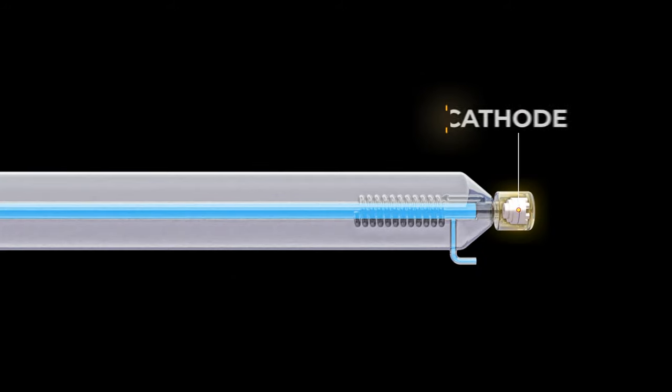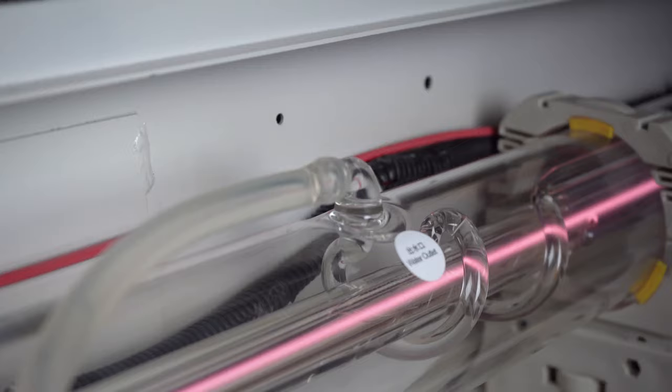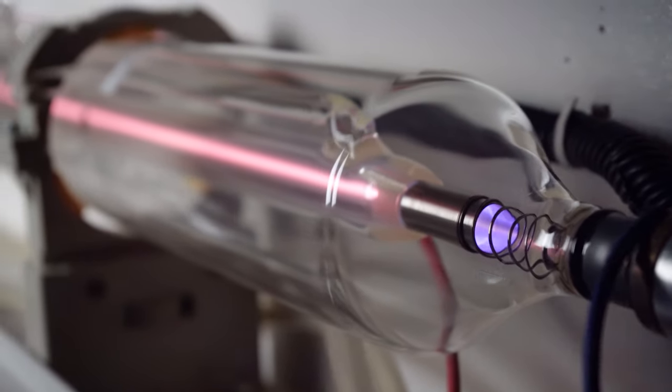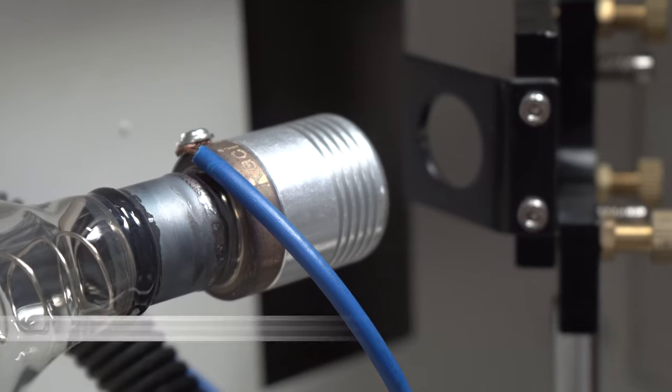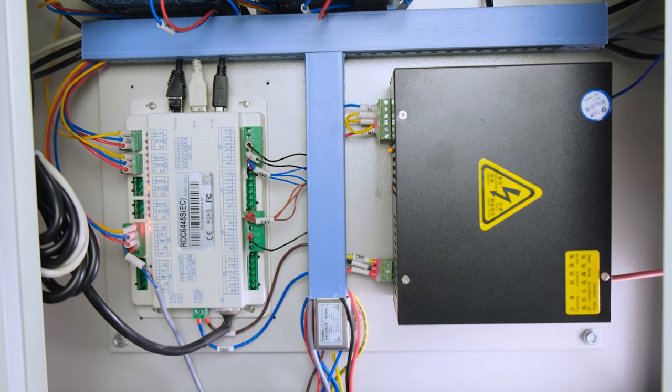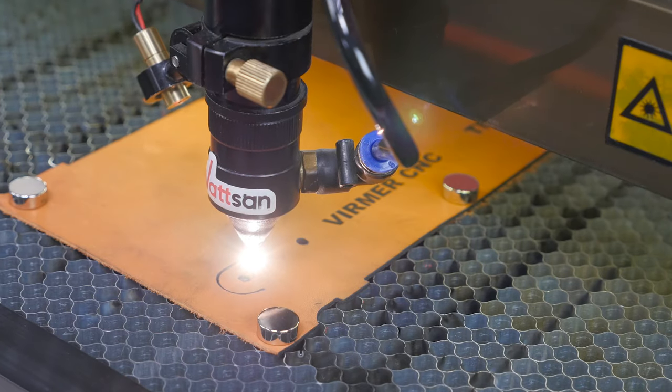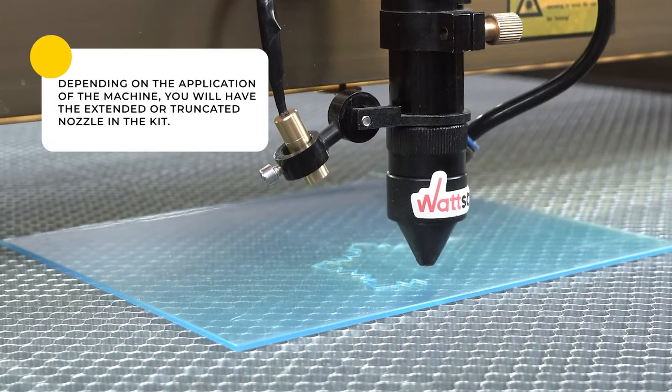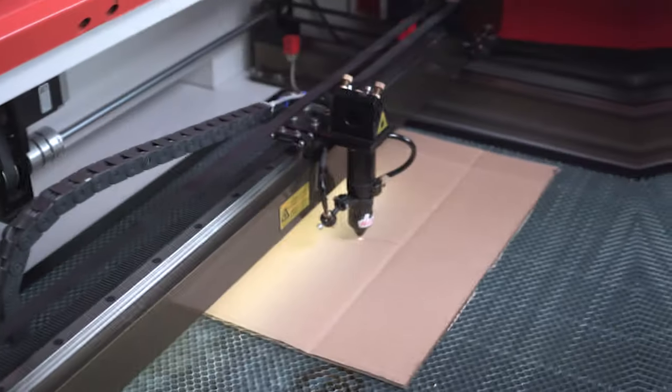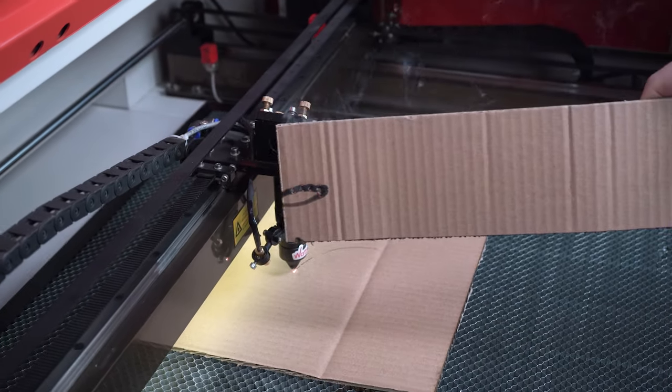When the electricity passes through the glass tube, it activates the gas medium, namely excites the molecules of the gas mixture and increases their energy. Both sides of the laser tube have conductors, cathode and anode, which transfer electricity from the high-voltage unit. The excited gas molecules release energy in the form of bright light. Its wavelength lies in the infrared spectrum and is therefore invisible. That's why you have to take special care and mind safety measures when working with the machine.